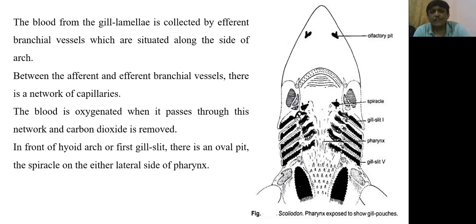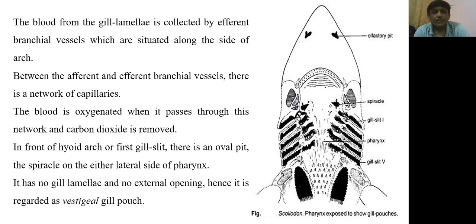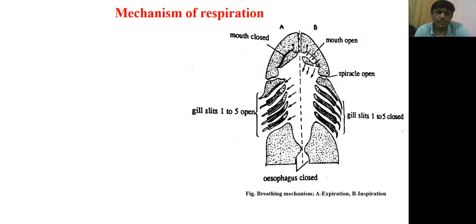In front of the hyoid arch on the first gill slit there is an oval pit called the spiracle, present on either side in front of the first gill pouch. It has no gill lamellae and no external opening, and hence it is regarded as a vestigial pouch.